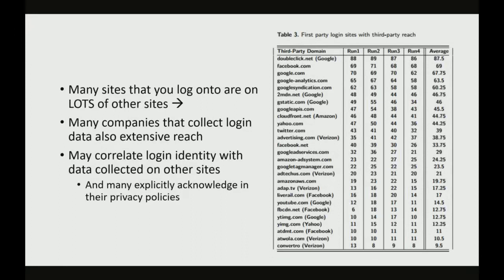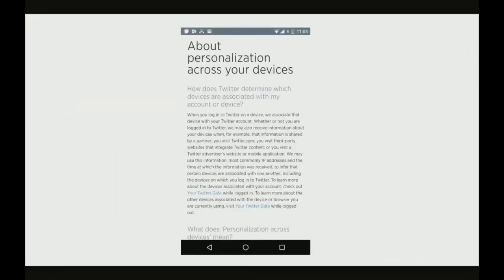The sites we log into also tend to show up a lot in these results. DoubleClick, run by Google, was on 87.5% of all the sites we visited. Facebook was on about 70% of the sites. These numbers are similar to other surveys that have been done. Google and Facebook are now explicit in their policies that yes, they do this. Facebook started about two or three years ago changing their privacy policy to allow it; Google, about one year ago. Amazon's policy is vague. Twitter, just two months ago, actually changed their privacy policy to allow cross-device tracking — so even if you're not logged into Twitter, they'll now be collecting widget data about you around the web to target ads. Previously they honored the Do Not Track setting, and now they no longer do that.